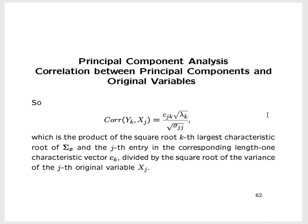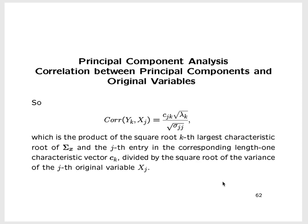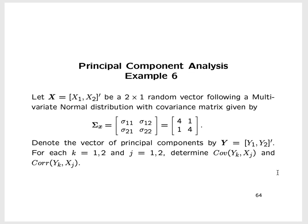The formula is the product of the square root of the kth largest characteristic root of Σ and the jth entry in the corresponding length-one characteristic vector C_k, divided by the square root of the variance of the jth original variable x_j. Either of the two formulas gives the same answer. Let's look at some examples.